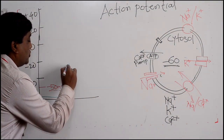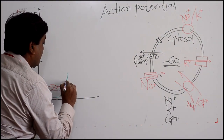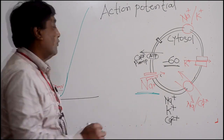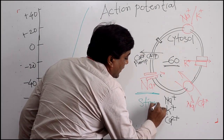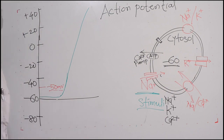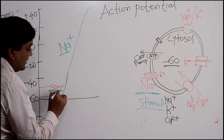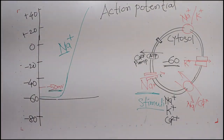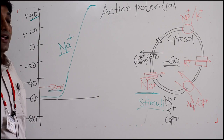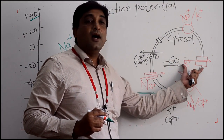Once the threshold potential is crossed, there is a sharp increase in potential. This is because the stimulus changed the voltage and, since these are voltage-dependent sodium ion channels, most sodium ion channels opened up. The result is that the potential changes to positive — you can see it reaching a peak on the chart. At this peak moment, the current changes its sign: sodium ion movement stops and potassium ions start moving outside the cell.